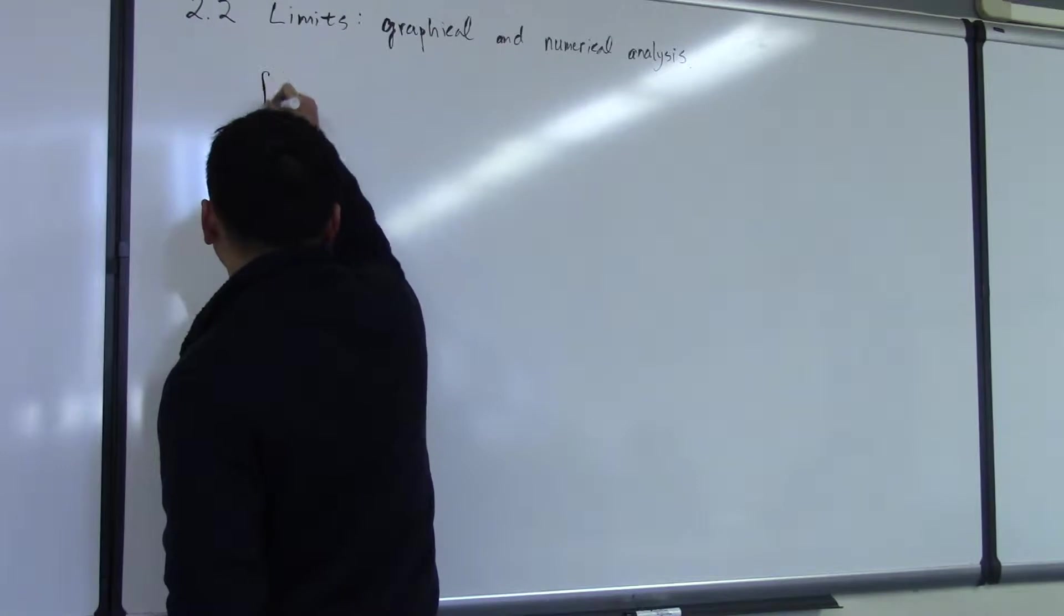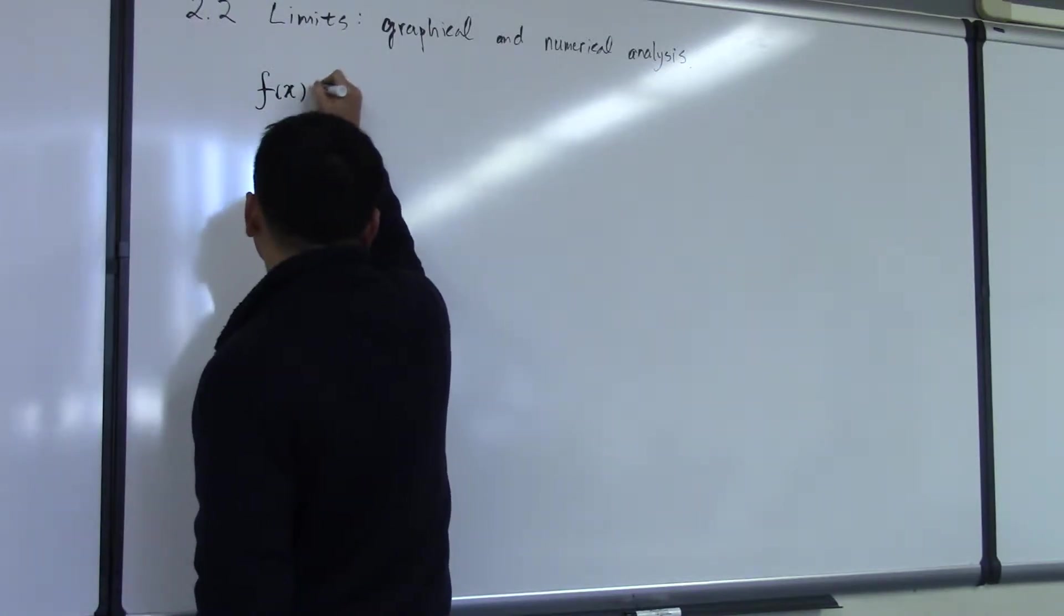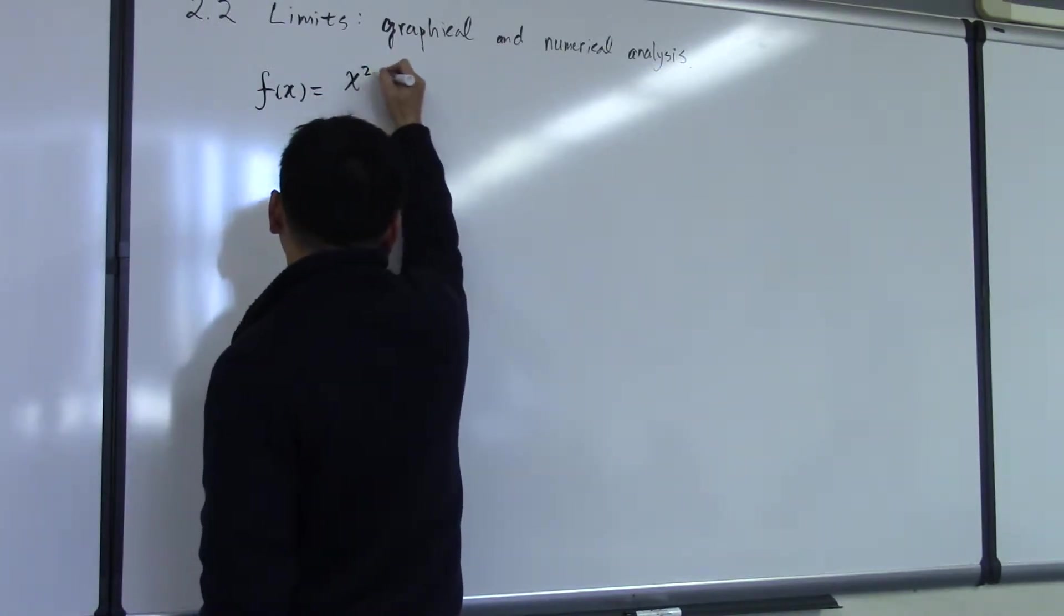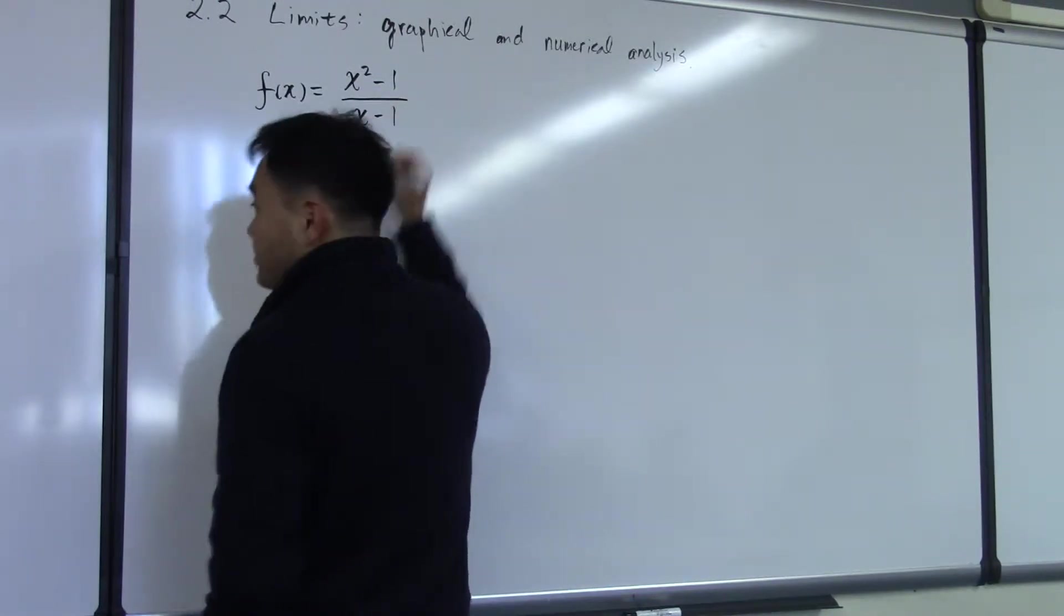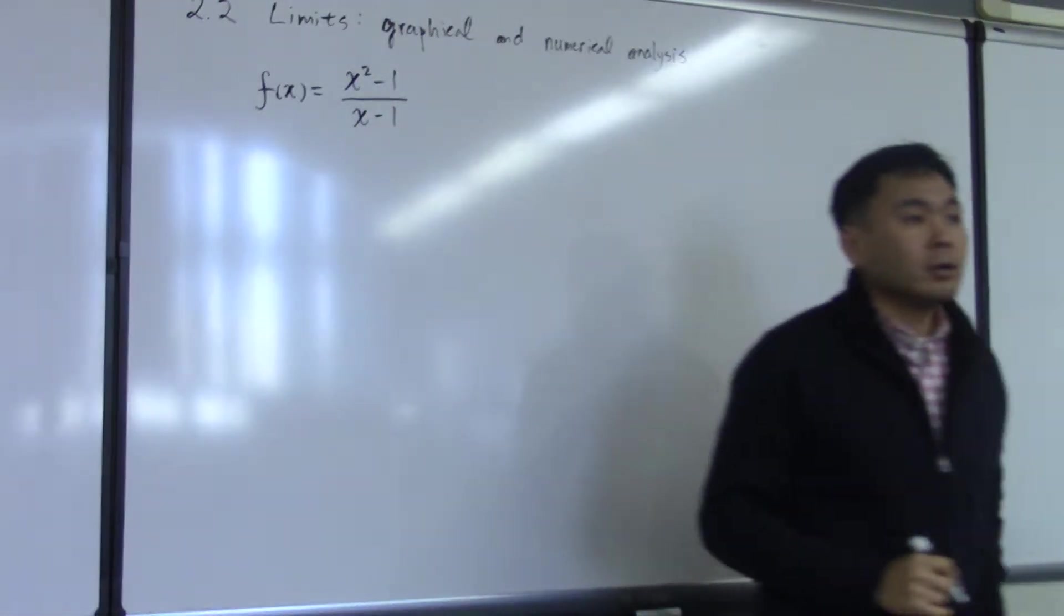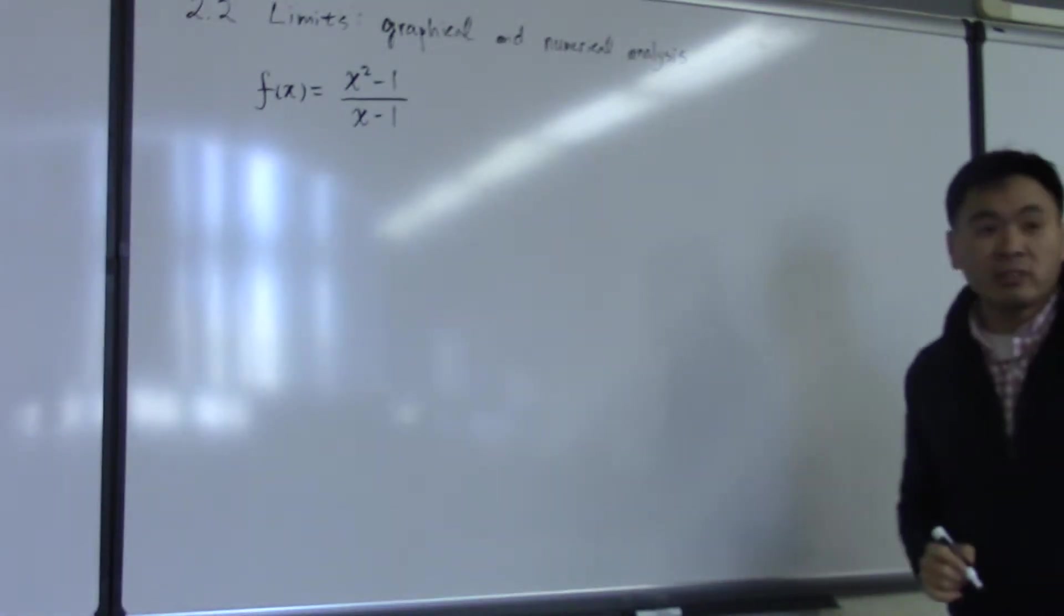The thing about the following function, f of x is equal to x squared minus 1 over x minus 1. Can somebody tell me the domain of this function?